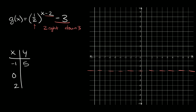For the other two y values, I'll just give them to you: they're one and negative two. So our three points are: negative one gives five, zero gives one, and two gives negative two. Connecting the dots, we get our exponential decay curve approaching the asymptote at negative three.